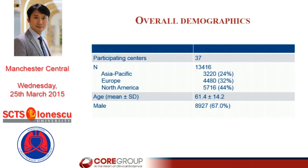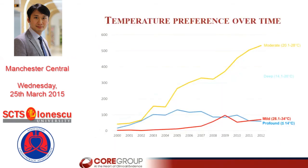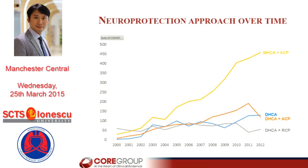To give you some ideas in terms of overall demographics: we have 13,400 patients from 37 centres with a mean age of 61. This shows the distribution of patients' age, and we can see there is increased use of moderate hypothermia over time from 2000 until 2012. There is also a trend of increased moderate hypothermia with selective antegrade cerebral perfusion — it is trendy, but it is the right thing to do. There are some surprises from the database which I'm not going to disclose at this stage, but the results are very stimulating and can be quite controversial.